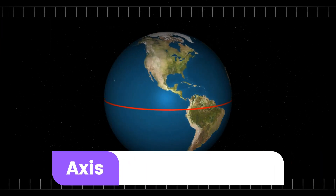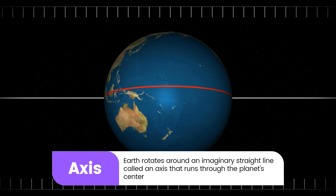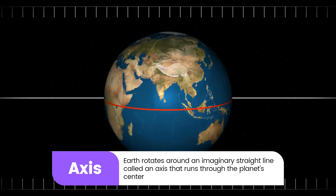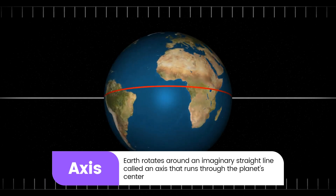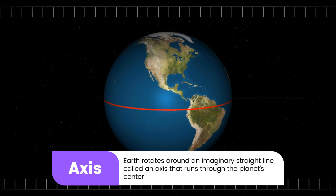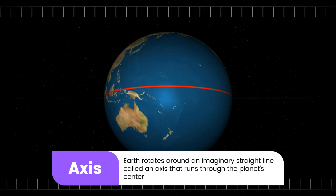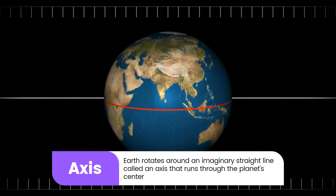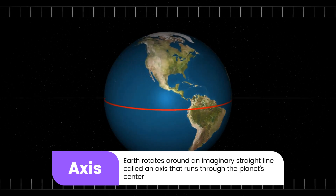Axis: Earth rotates around an imaginary straight line called an axis that runs through the planet's centre.